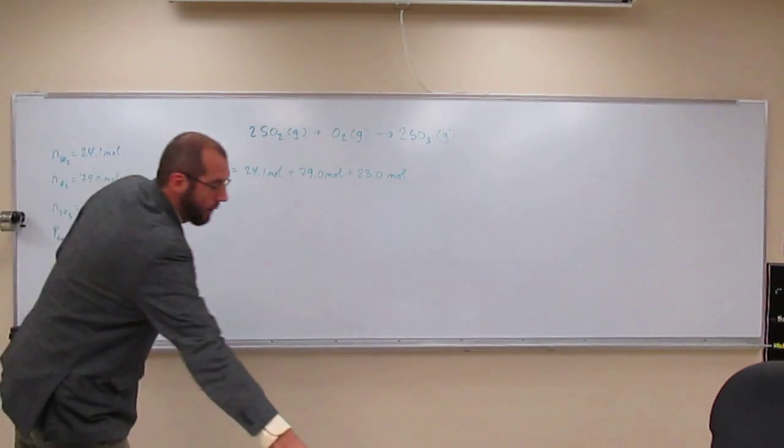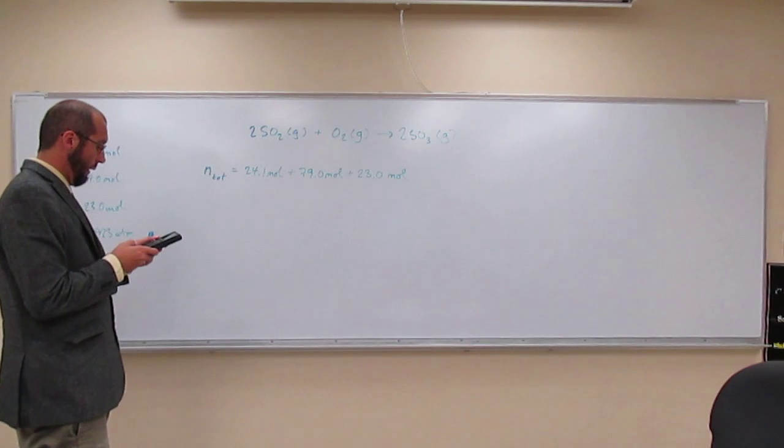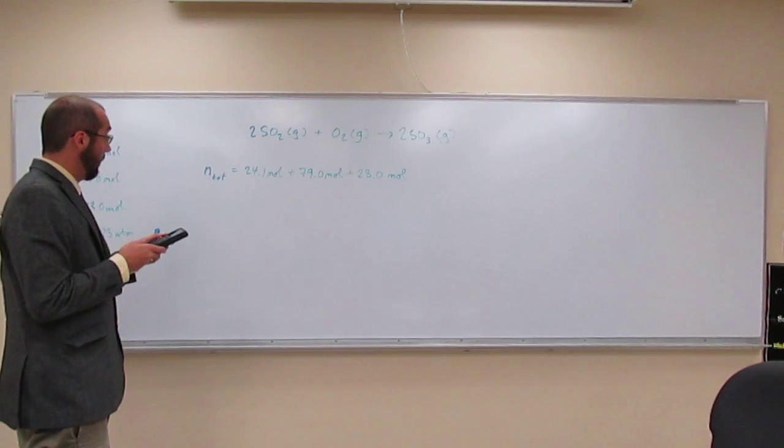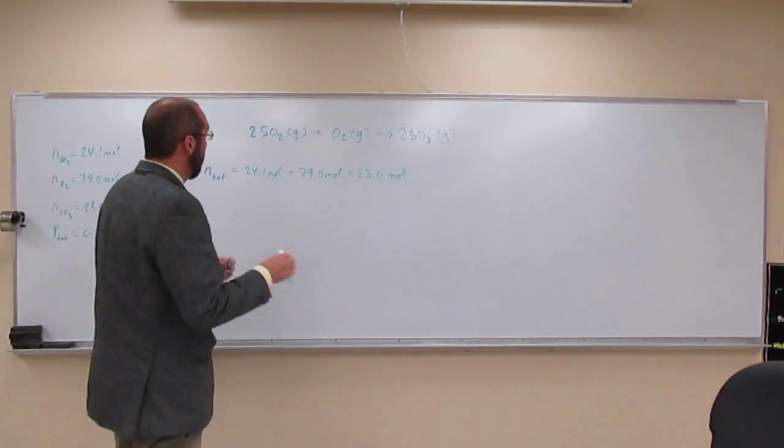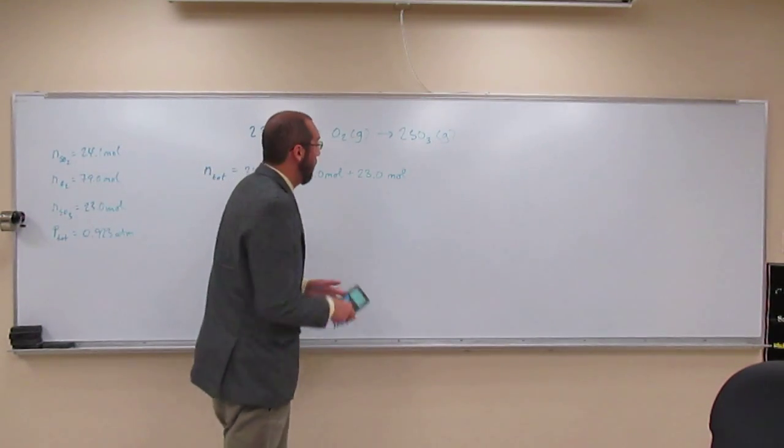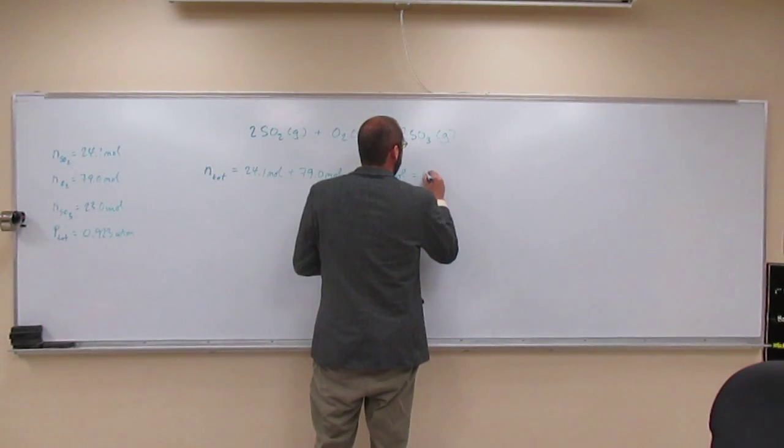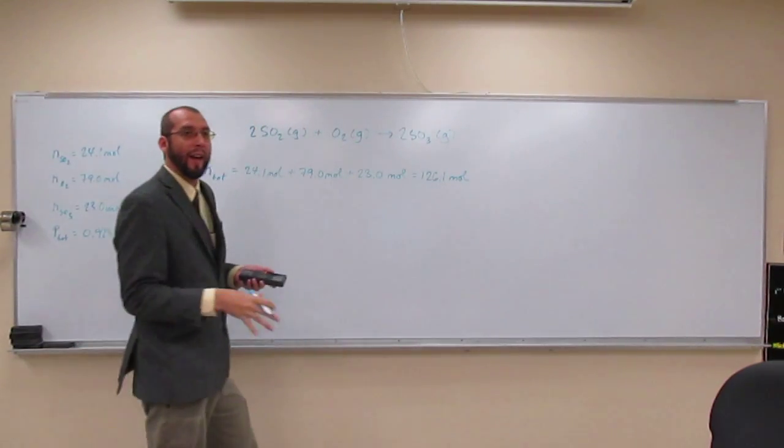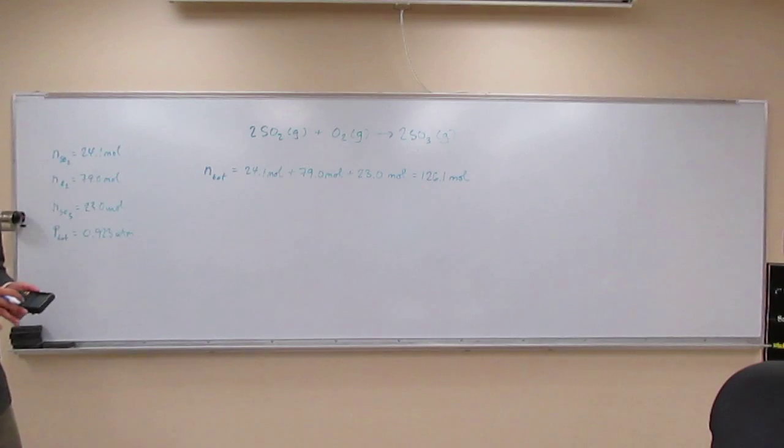Then just add those three numbers up. 24.1 plus 79.0 plus 23.0 is 126.1 moles. That's the total number of moles of gas you have in the reaction mixture at this particular time.